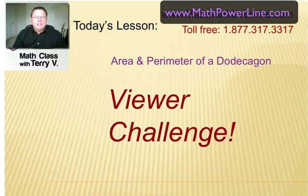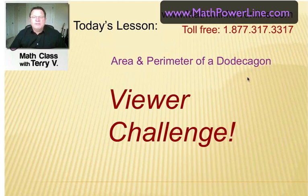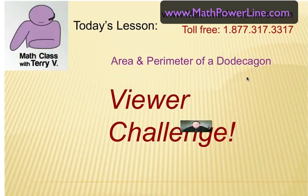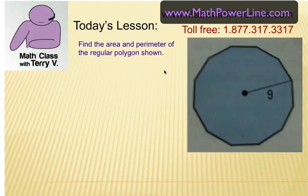This video is a viewer challenge, and this question has been brought in by Molly, one of my viewers. She has a question about a regular polygon. This shape is called a dodecagon. We're trying to find the area and perimeter of a dodecagon. She sent me a picture of it, and basically all we know is the radius is 9. We're trying to find the area and perimeter of this shape.